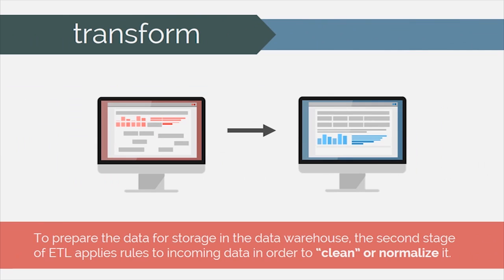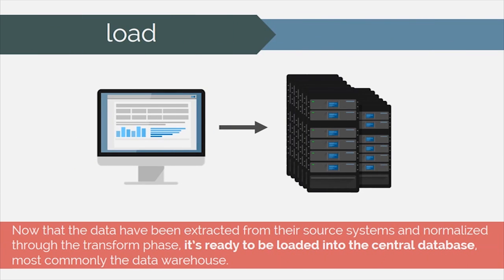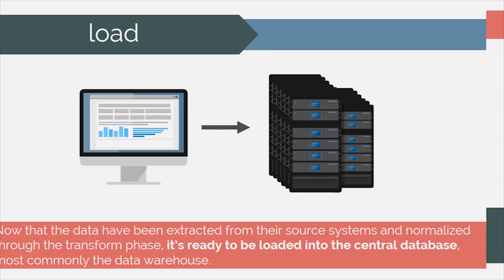To prepare the data for storage in the data warehouse, the second stage of ETL applies rules to incoming data in order to clean or normalize it. Now that the data have been extracted from their source systems and normalized through the transform phase, it's ready to be loaded into the central database, most commonly the data warehouse.